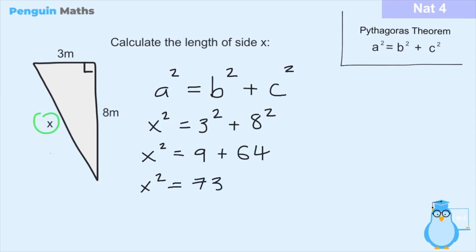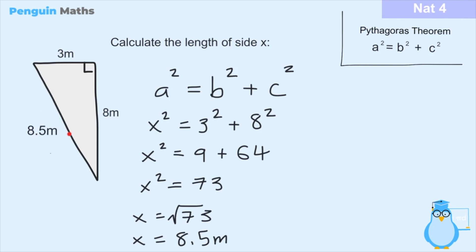Adding 9 and 64 gives 73, so x squared equals 73. To get x we take the square root: x equals the square root of 73. Using a calculator, the square root of 73 is approximately 8.5 meters. So we can replace x in our diagram with 8.5 meters. It doesn't matter which of the three sides we're asked to calculate — they can always be solved using Pythagoras, as long as we correctly identify which side is a, b, and c.